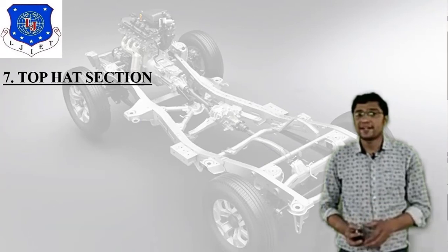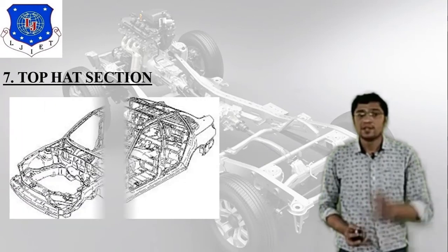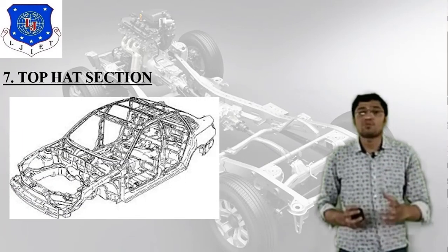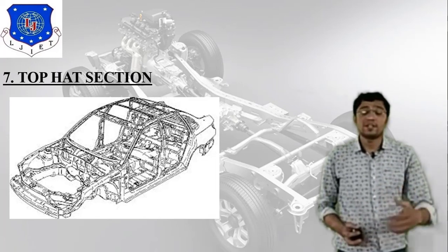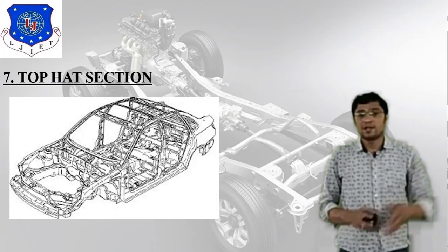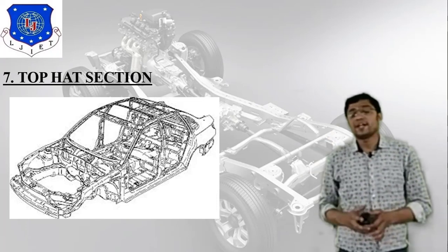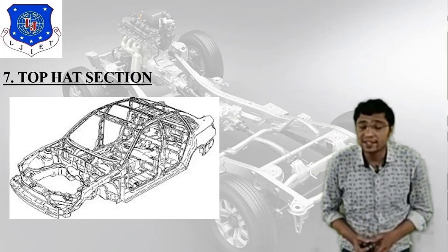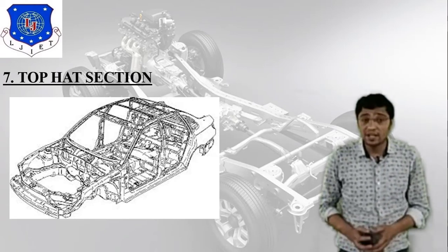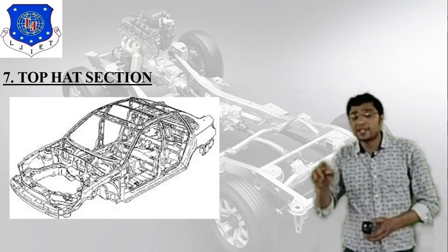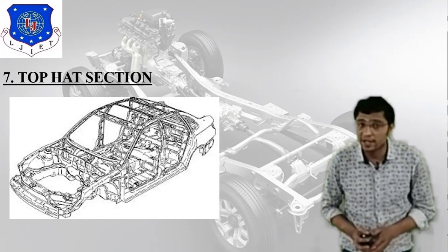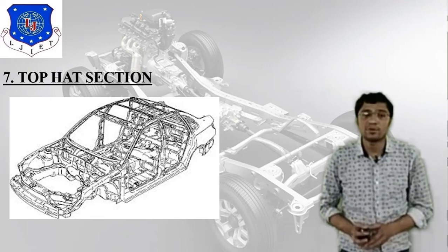The seventh type is the top hat section. In a car or four-wheeler, the topmost portion uses a C section — this is what the top hat section is. There are many types of top hat sections available, including slope sections, and different types of top hat sections exist.